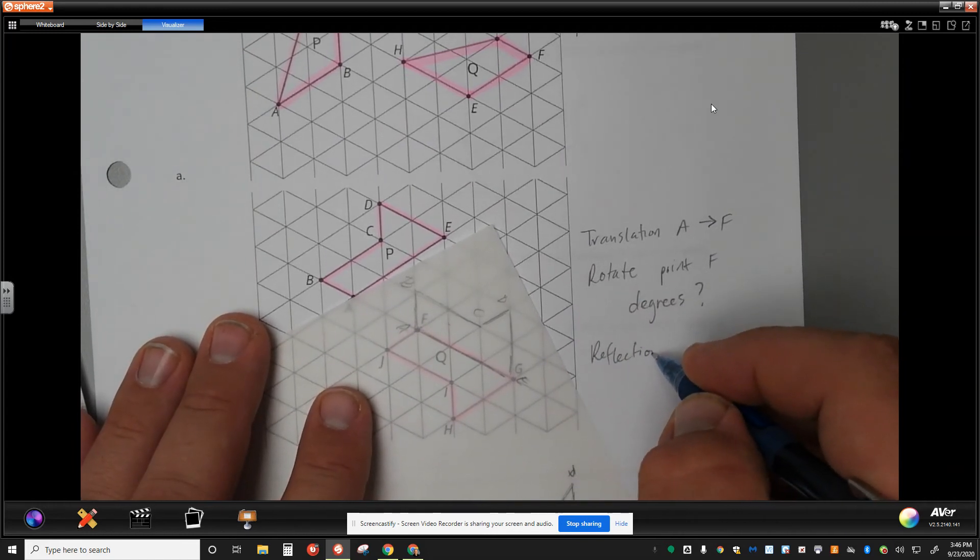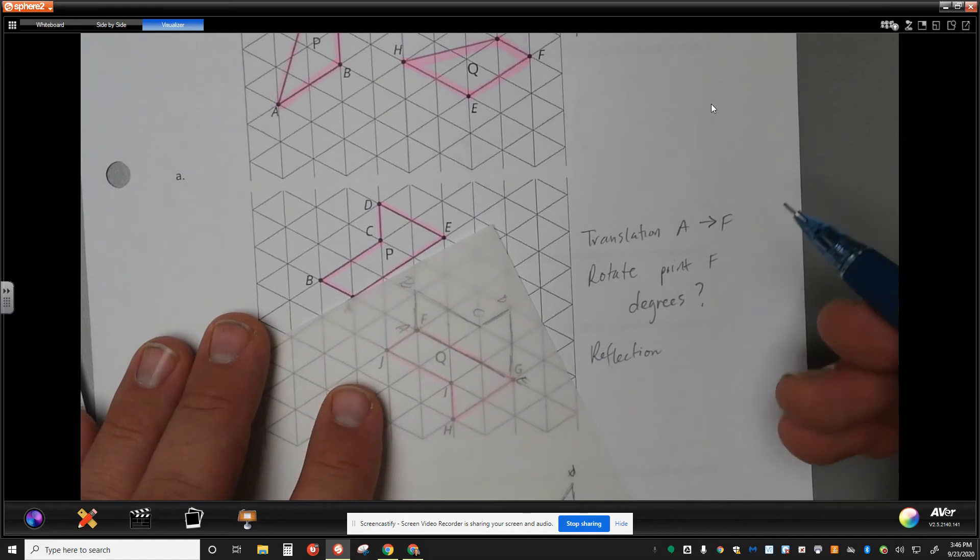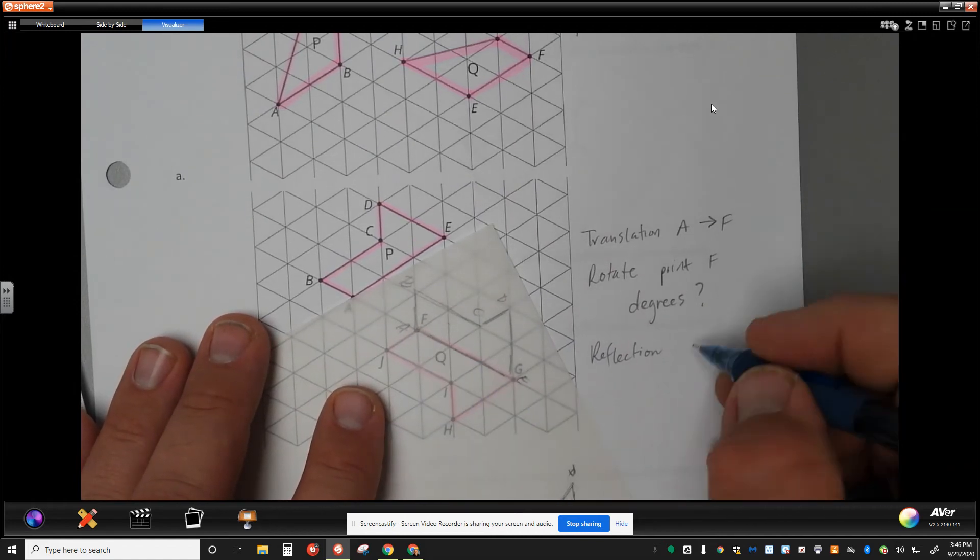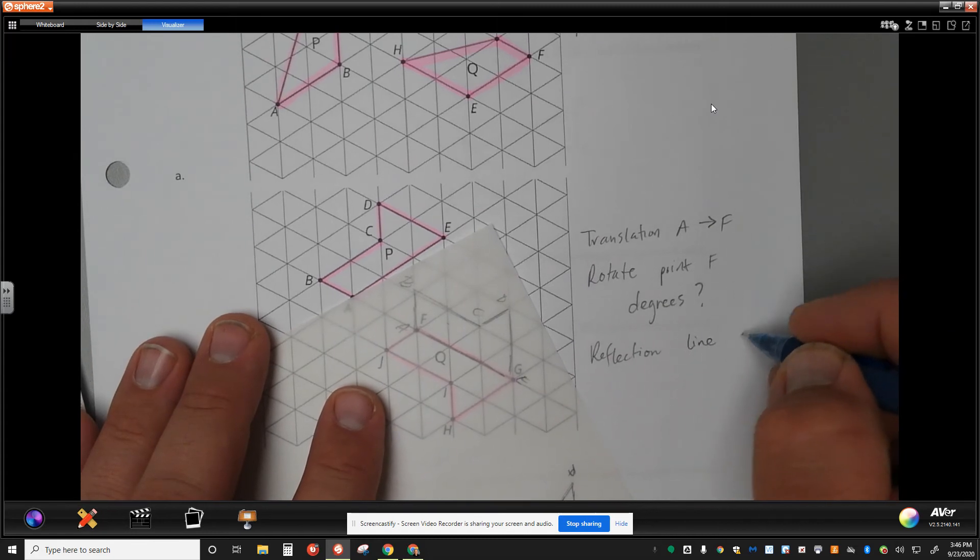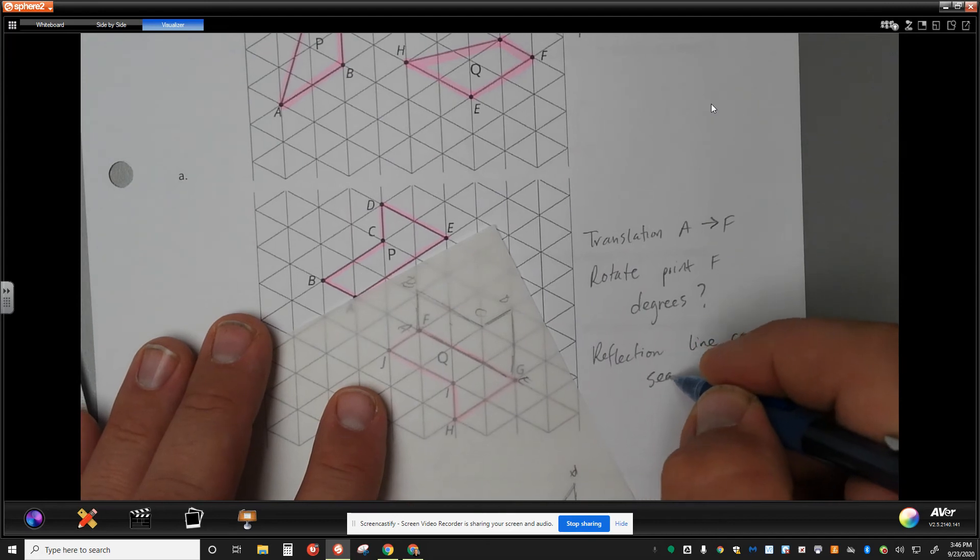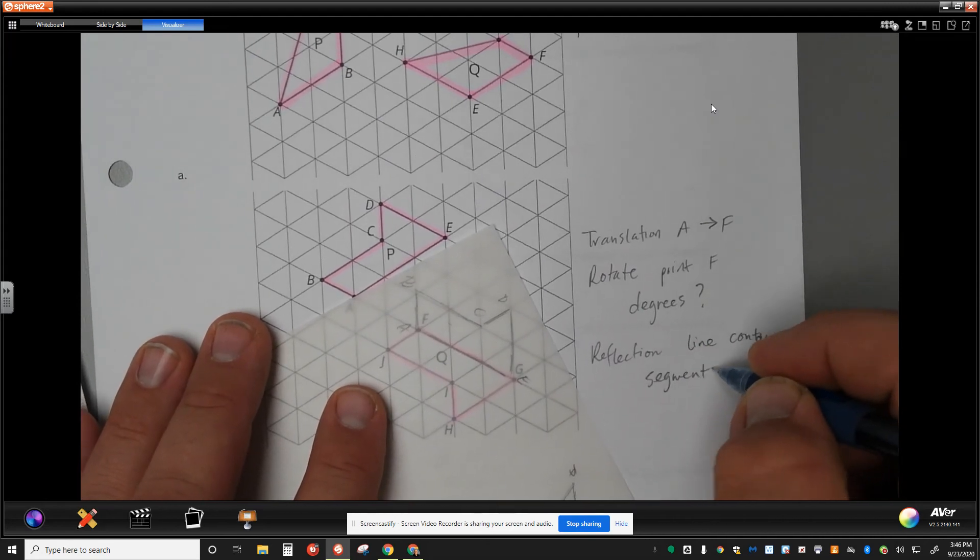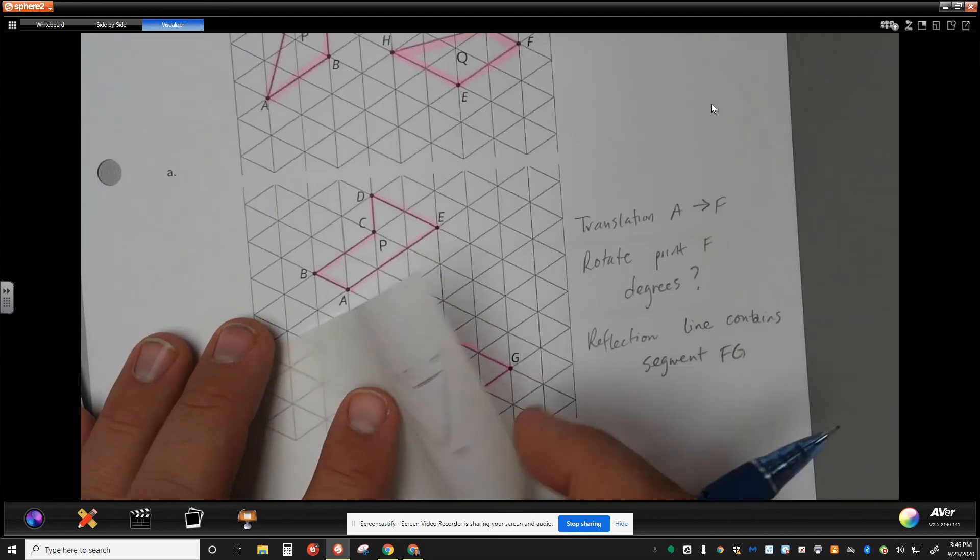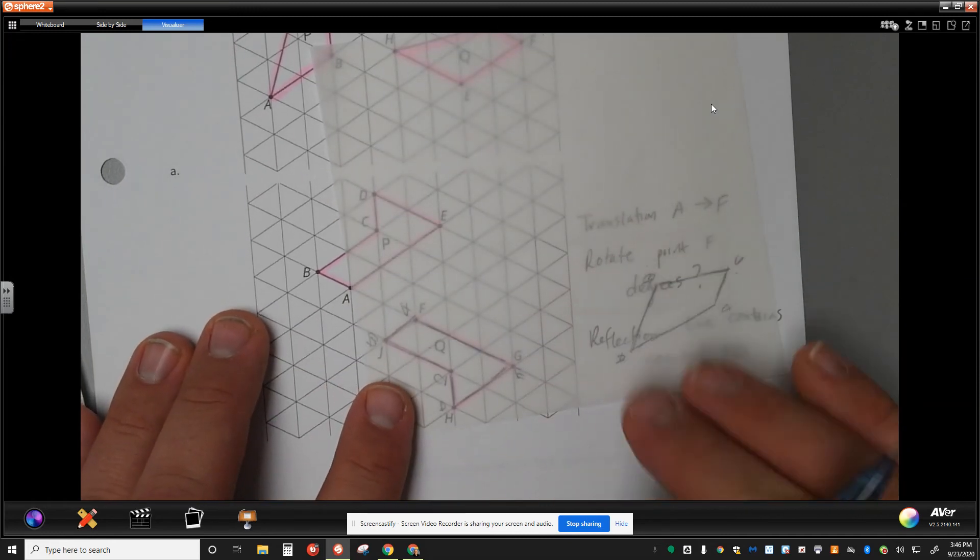And then we have to talk about a reflection. In this case, you want to talk about your reflection across a line. And this line contains the segment F, G. That would be your best way to talk about it.